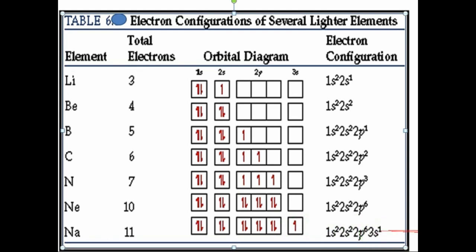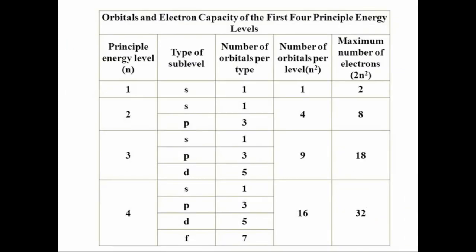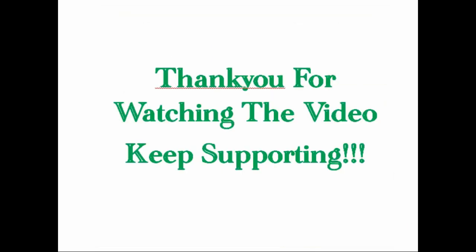Here I have one more example for you. In the first orbit there is only one orbital - S orbital. According to 2n² rule, the first orbit has 2 electrons, the second orbit has 8 electrons, third orbit has 18 electrons, and the fourth orbit has 32 electrons. The same representation is here. Thank you so much for watching the video, keep supporting.